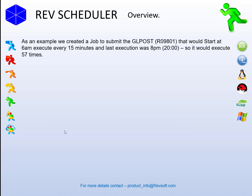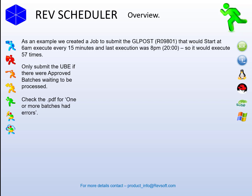As an example, we created a multi-run job to submit the GL post R09801 that would start at 6am and execute every 15 minutes with the last execution at 8pm, so it would execute 57 times. We only wanted to submit the GL post if there were approved batches waiting to be processed. When it did submit the GL post, we wanted to check the output and see if one or more batches had errors in the PDF. If there were errors, we wanted to retrieve the batch number, update the dashboard, send out emails, etc.